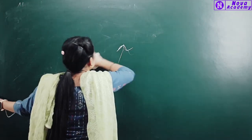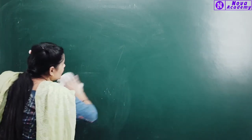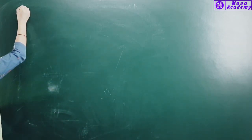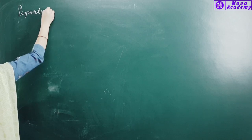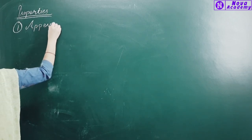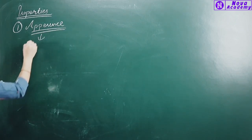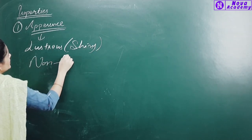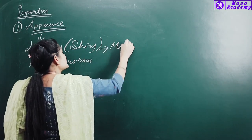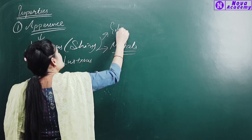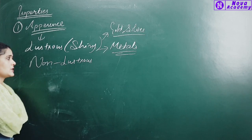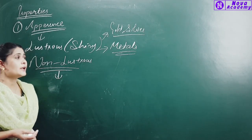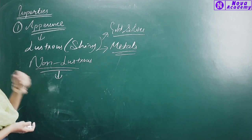The properties of materials are very important so we can use them. First of all, let's talk about appearance. If we see the material, it can be lustrous — shiny. The other type is non-lustrous — dull appearance. Metals like gold or silver are shiny, so we use them to make jewelry. If they have a dull appearance, we will not make jewelry; we will use them in a different way. This is the surface appearance of the material.